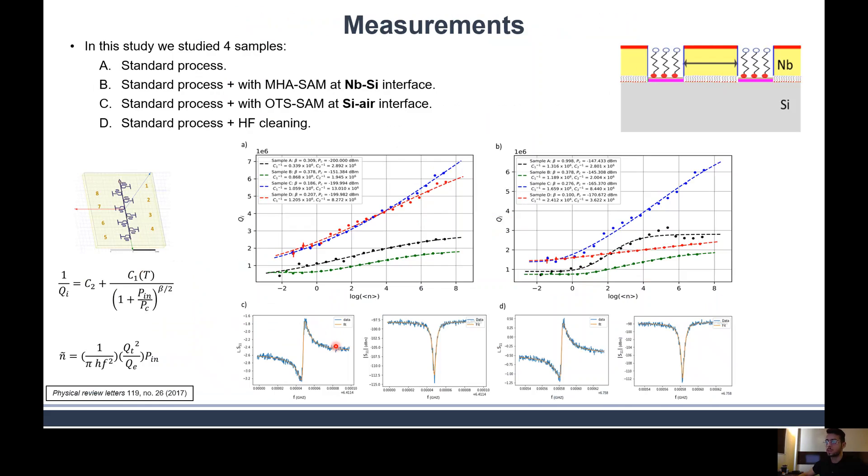You can see here four samples with eight resonators each, where we perform a complete study of how SAM can improve the quality factor of the device. Sample A, shown in the black curve, represents the standard process. Sample B, represented in the green curve, shows the standard process with MHA SAM at the niobium-silicon interface. Sample C, in the blue curve, has SAM at the silicon-air interface with OTS SAM. Sample D has standard process with HF cleaning alone, without covering that surface with SAM.